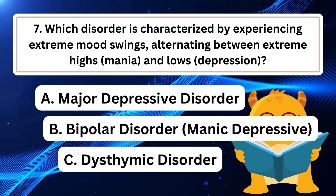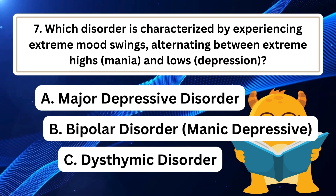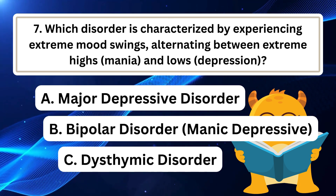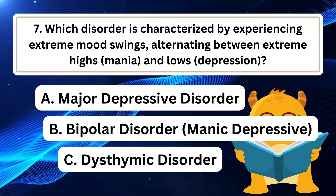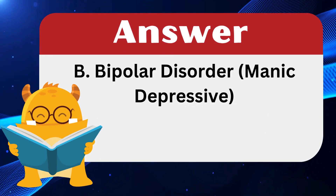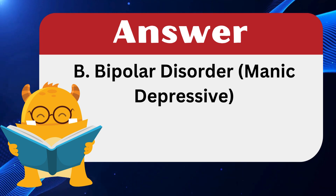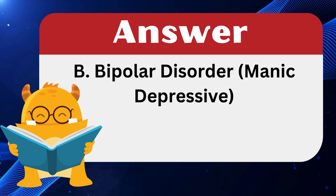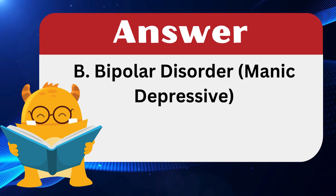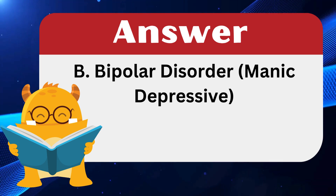Question 7: Which disorder is characterized by experiencing extreme mood swings alternating between extreme highs (mania) and lows (depression)? The answer is B: Bipolar disorder, also known as manic depressive disorder. It involves extreme mood swings alternating between periods of mania — elevated mood and high energy — and depression. Major depressive disorder is characterized by persistent low mood, while dysthymic disorder is mild chronic depression.